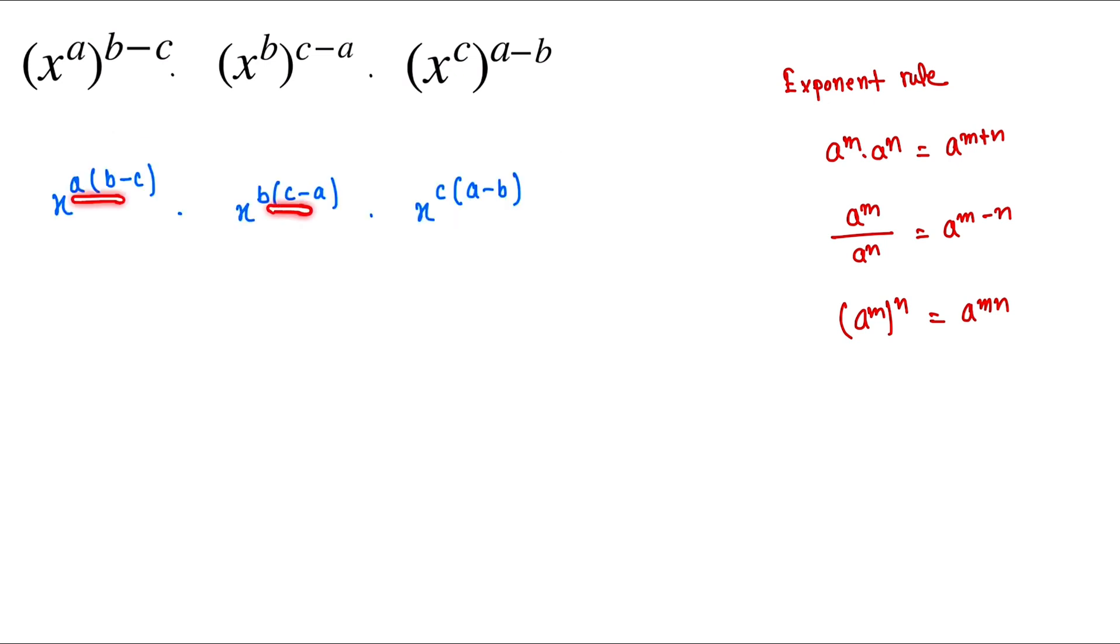Now we multiply this one. So here is x to the power ab minus ac, and x to the power bc minus ab, and here x to the power ca minus bc.